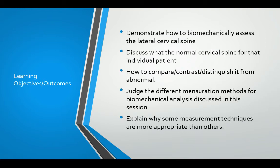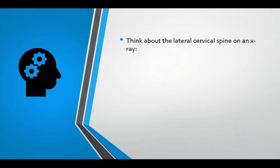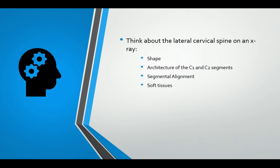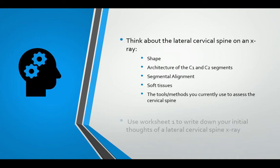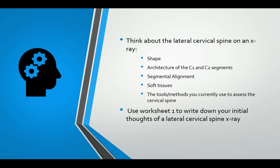Before we get started into the real nuts and bolts of today's teaching session, I want you to take a moment and fill out part of worksheet 1. I'd like you to reflect and think about what the lateral cervical spine should look like on an x-ray — your preconceived perceptions of its overall shape, the architecture of the C1–T2 segments, the segmental alignment, what the soft tissues look like, and any methods and tools you currently use to assess the cervical spine. Use worksheet 1 to write down your initial thoughts for discussion with your peers and for your formative assessment. If you wish to pause the video to do this, please do so now.